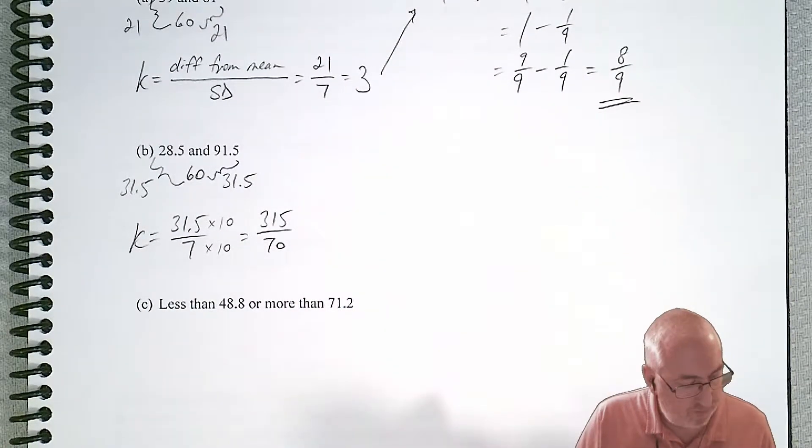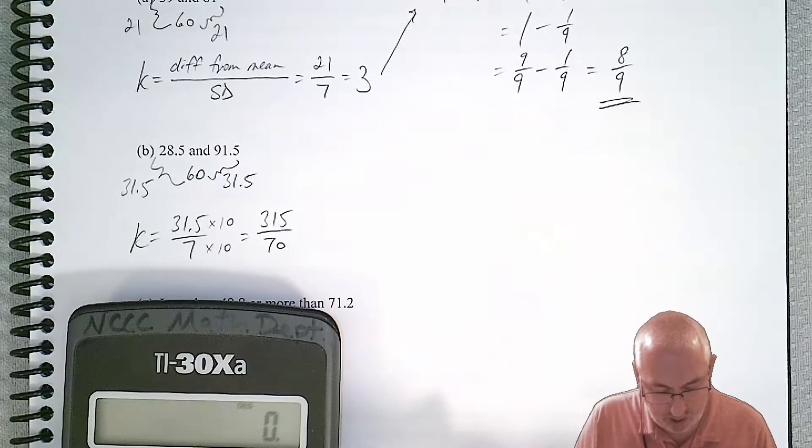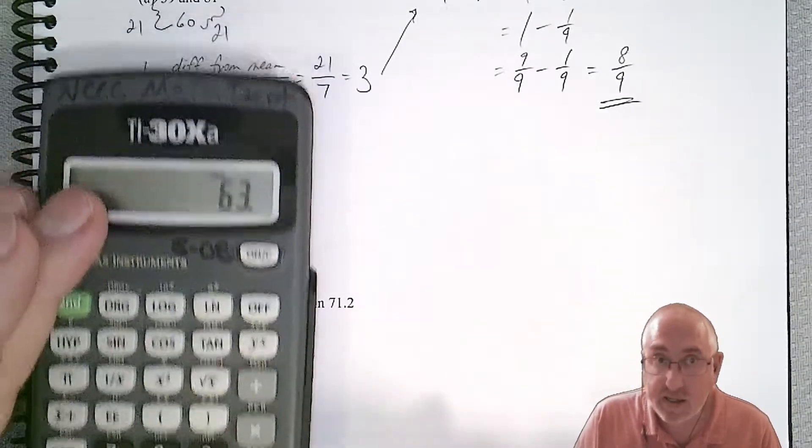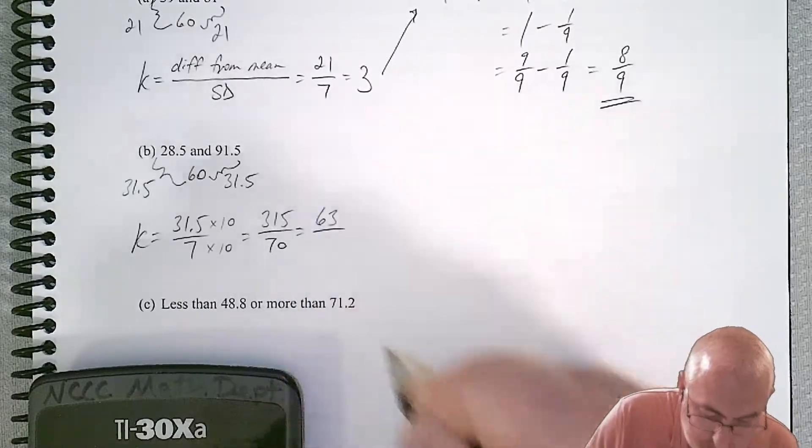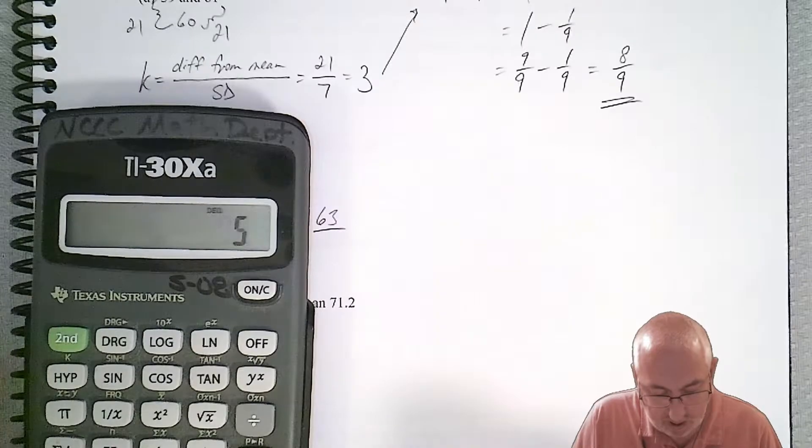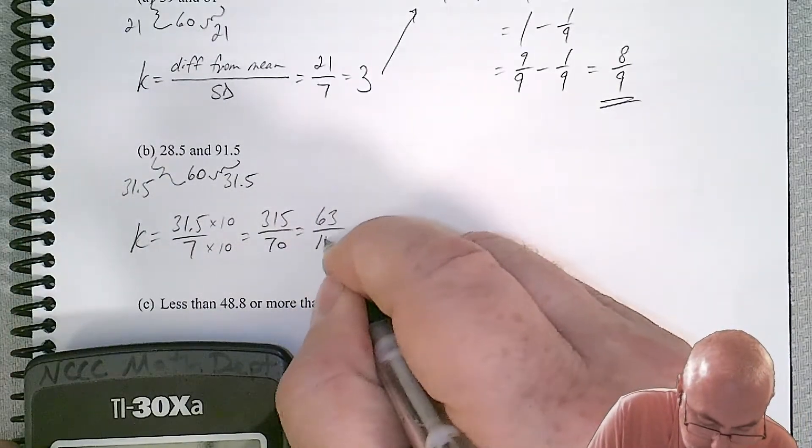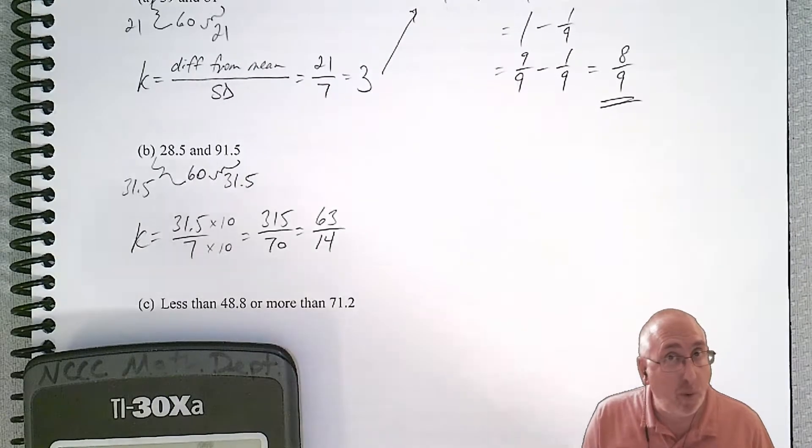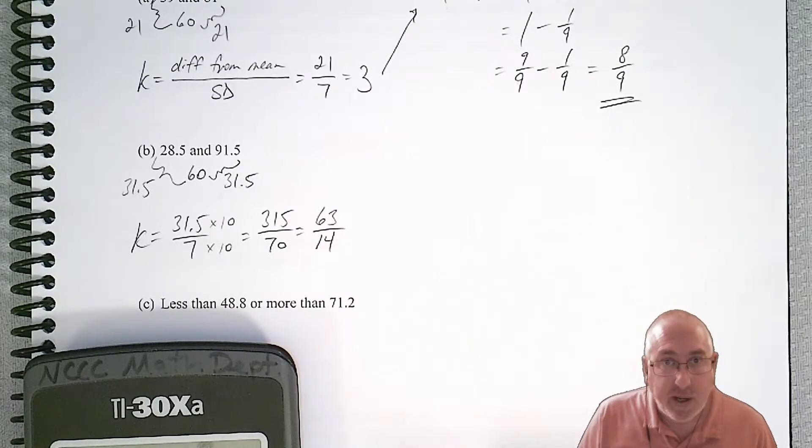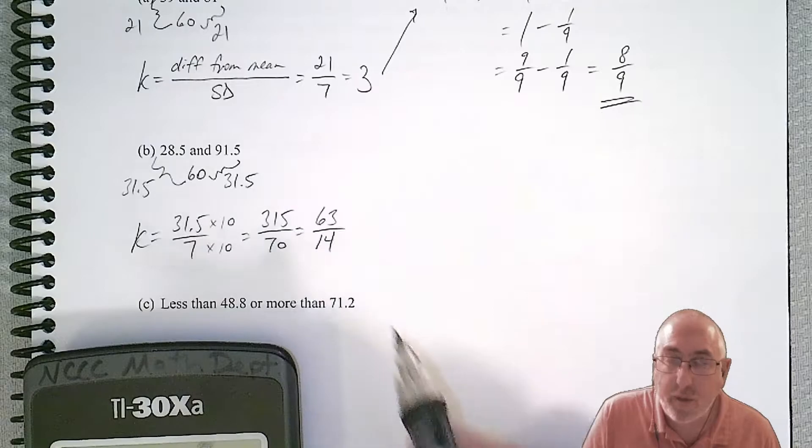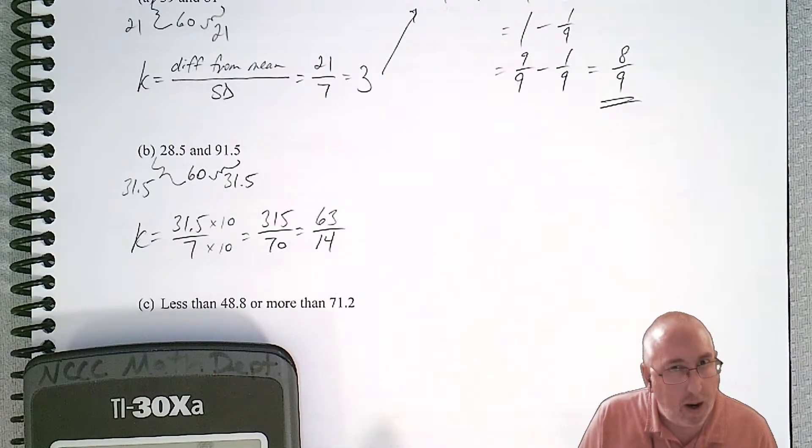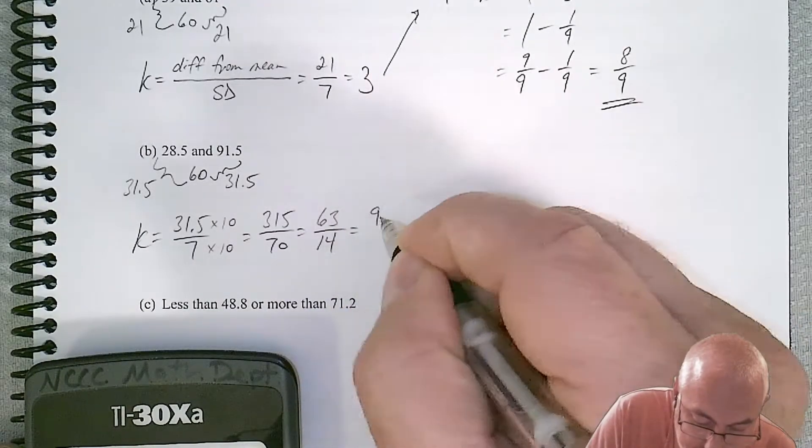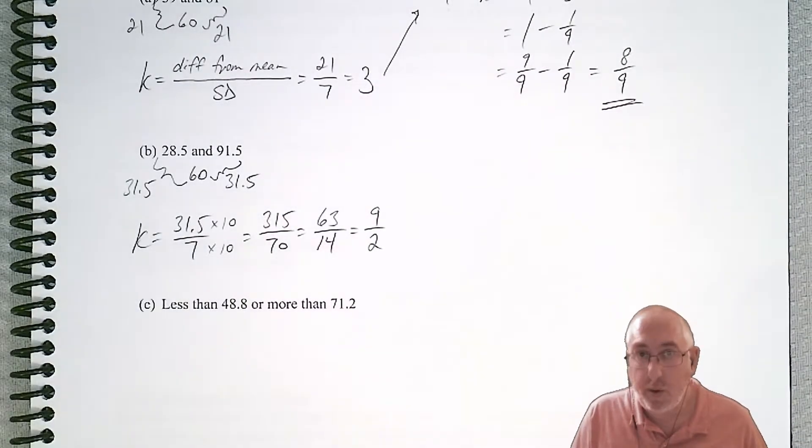Now we just have to reduce it because we don't want to use something that large. We want to reduce it down. So let's divide by 5 first on the top and bottom. 315 divided by 5 is 63. And if we divide 70 divided by 5, we get 14. Can we go even further? What goes into 63 and 14? If you think hard enough, you probably come up with 7. So if we divide both of those by 7, that's going to give us 9 over 2.